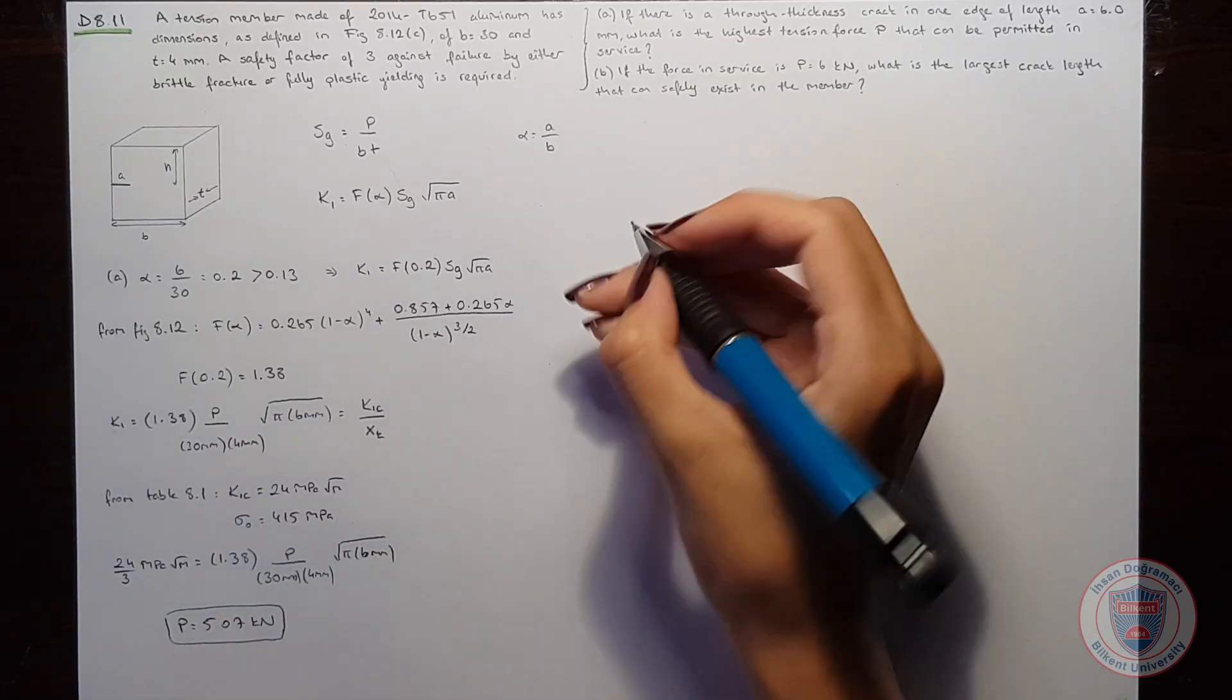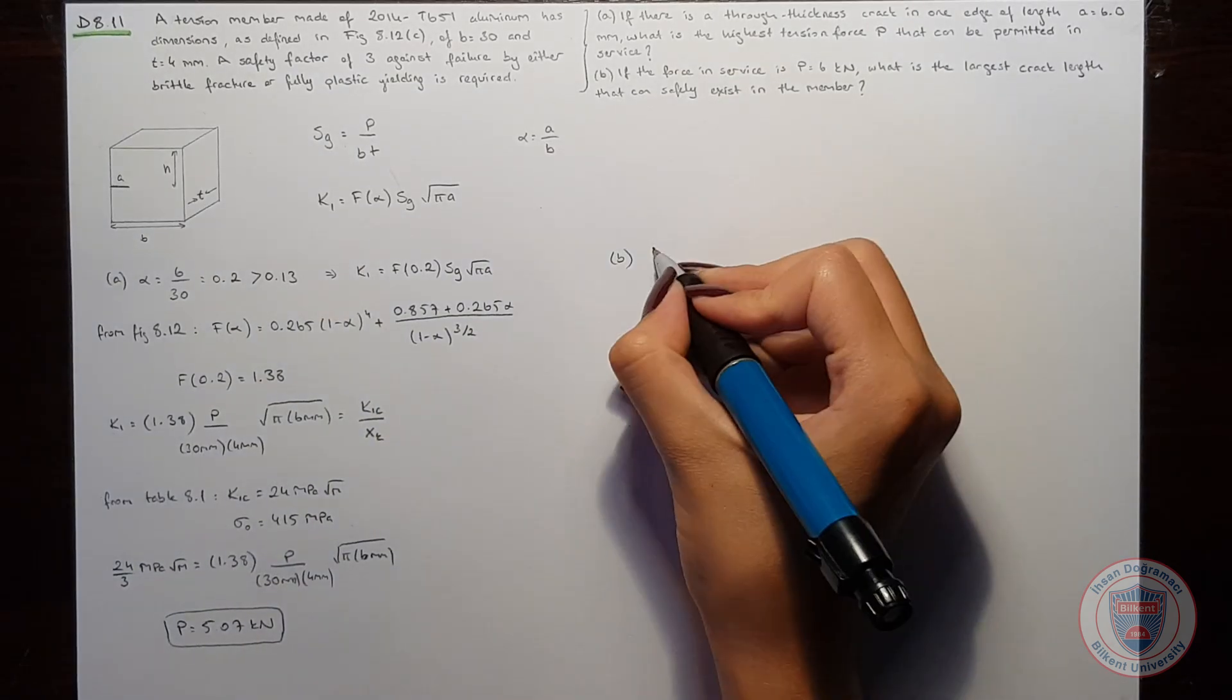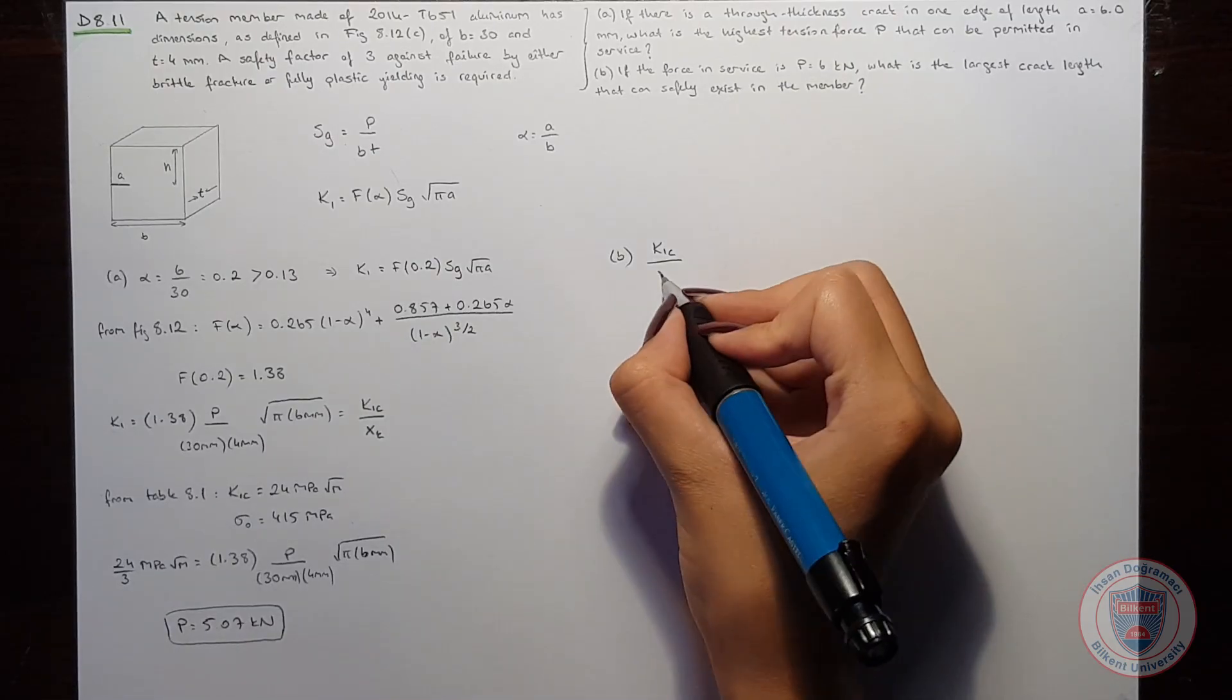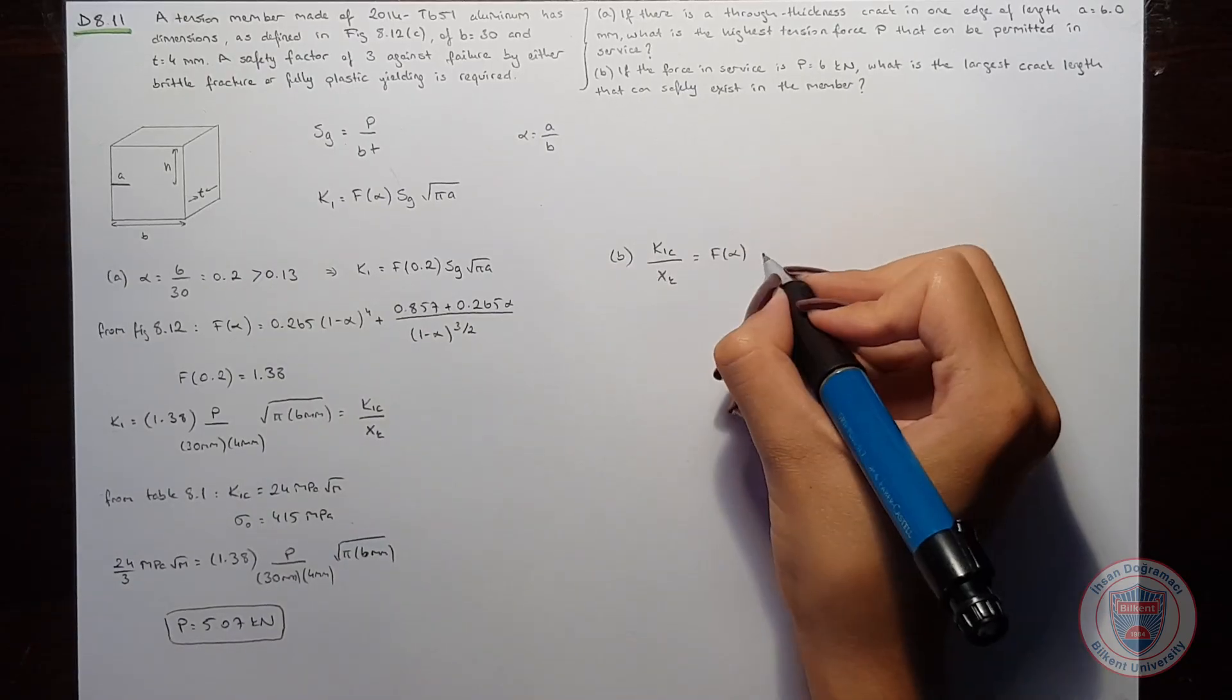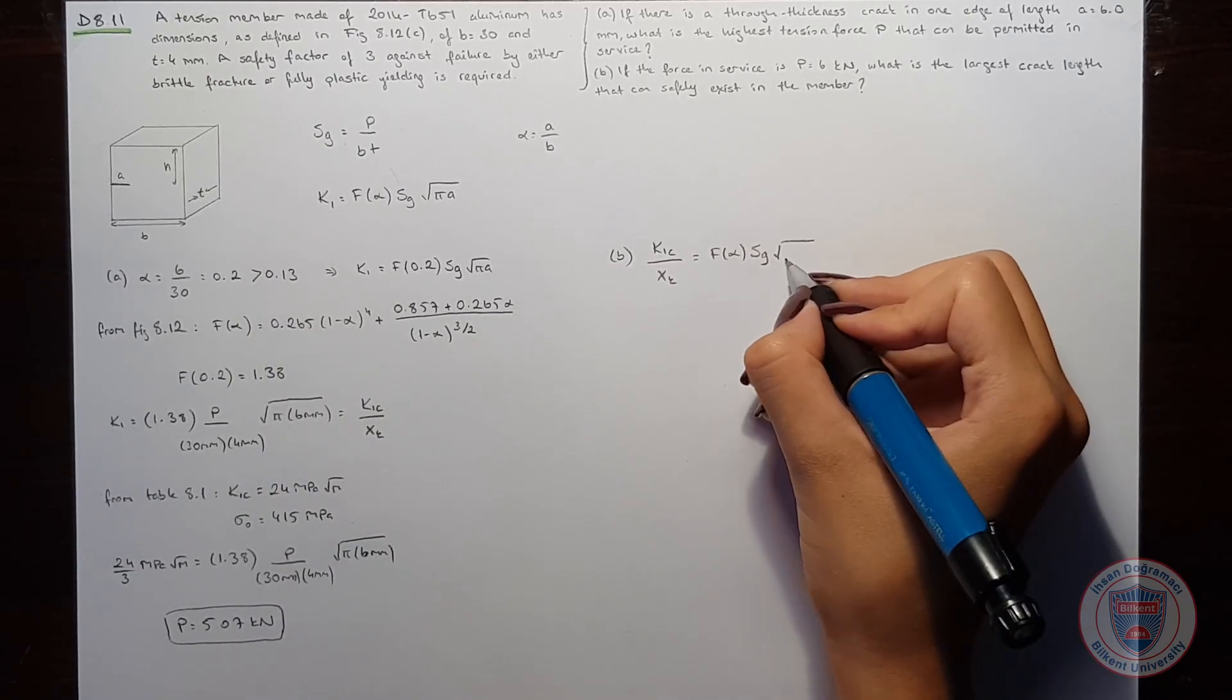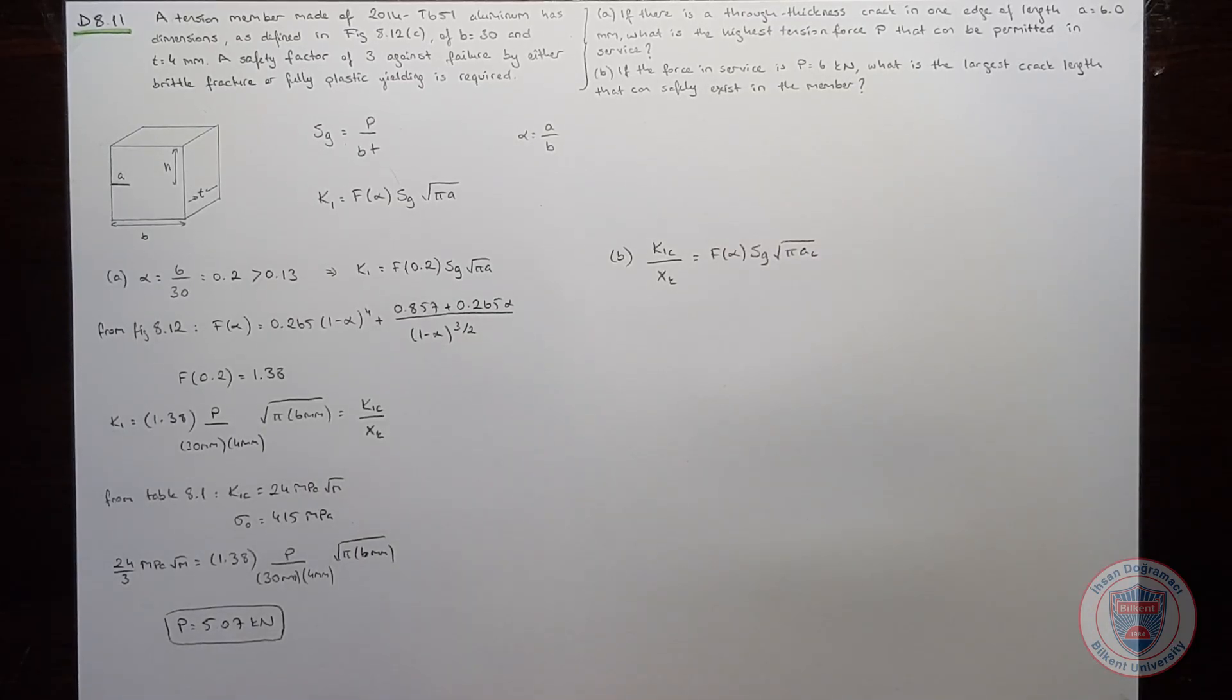Let's move to part B. In part B, we already said that the critical stress intensity factor over the safety factor will be equal to the form factor times S_gross times pi times the critical crack length.